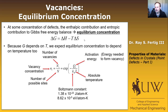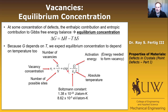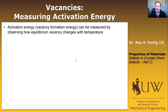The exponent e to the negative Q_V over k_B T represents the likelihood that the random thermal energy at temperature T will allow you to overcome the activation barrier. This quantity is essentially a probability — the probability that at a given temperature, you'll jump over to the new state. So the question is: how do we measure the activation energy, sometimes called the vacancy formation energy?